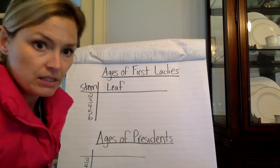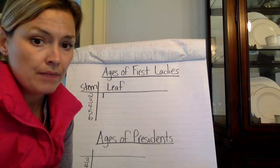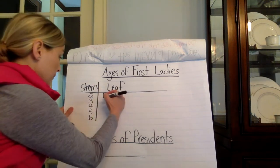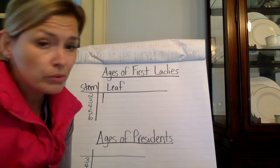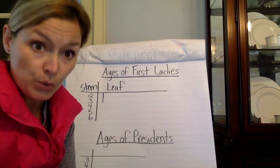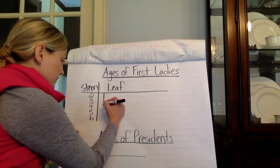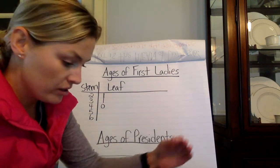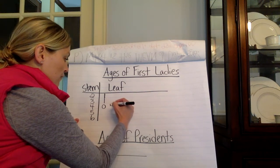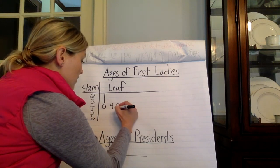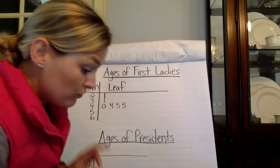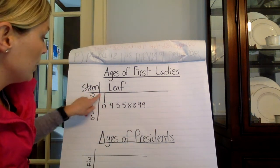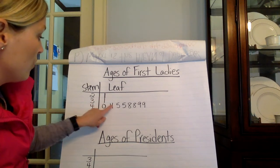The two in the stem represents the 20s — the tens place value — and I put a one here for the one first lady who was 21. That was the only first lady in her 20s. The next first lady is 31 — that was actually Jackie Kennedy — and she was the only first lady in her 30s. Jumping up to the 40s, we have a first lady who was 40, so I put a zero here. There are quite a few others in their 40s: 40, 44, 45, 45 again, two that were 48, and two that were 49.